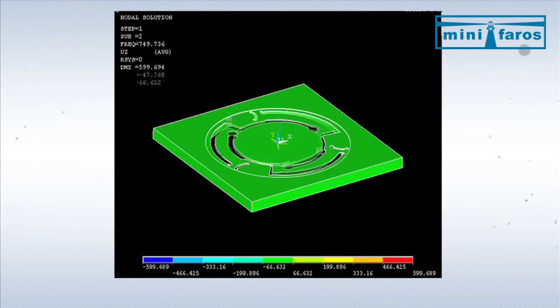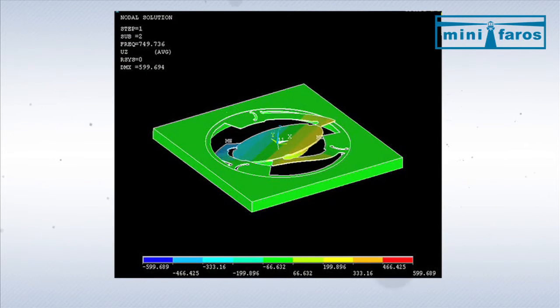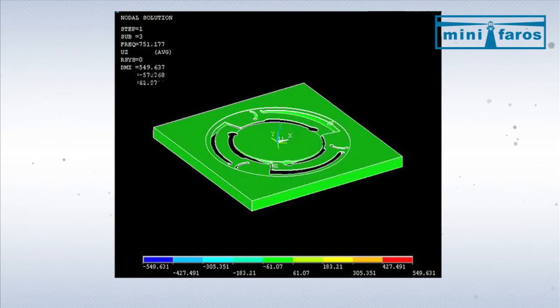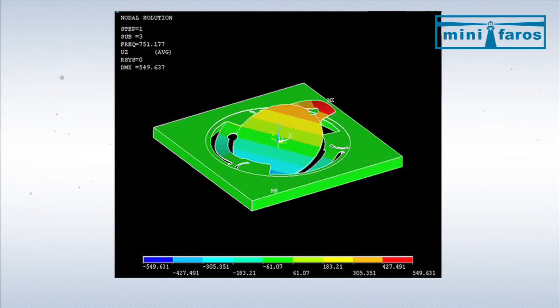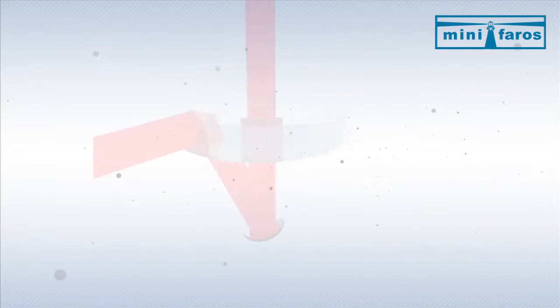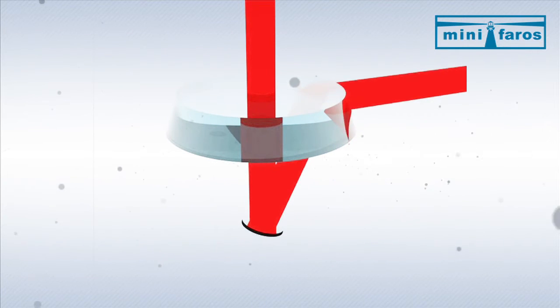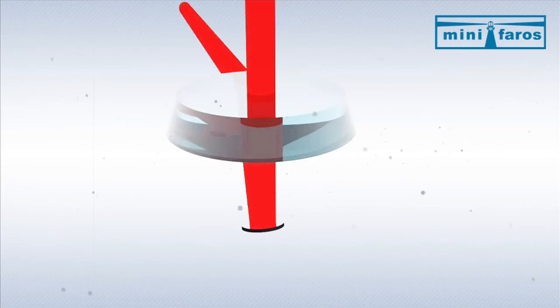The collimated beam from the omnidirectional lens impinges on a two-axis MEMS scanning mirror. The tilted mirror reflects the beam back to propagate through the lens again. The beam exits the omnidirectional lens perpendicular to the optical axis of the incoming divergent laser beam.